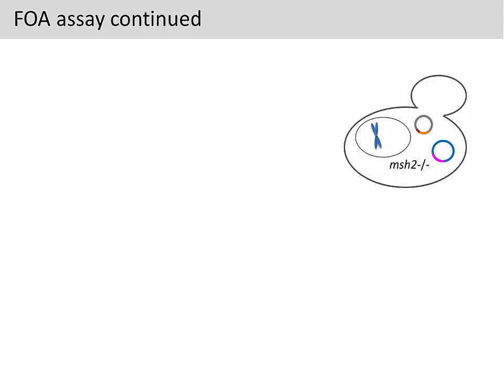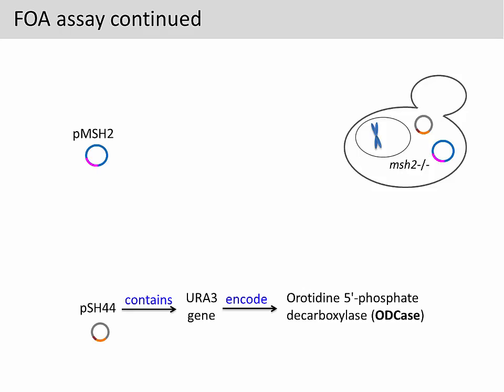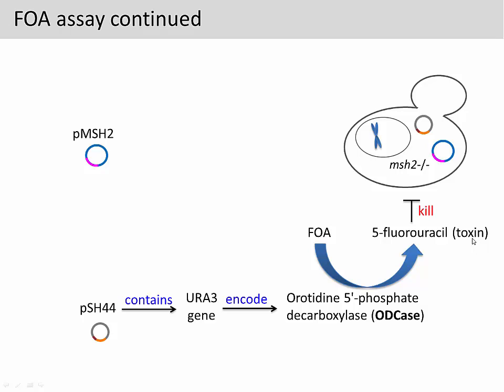So how does this reporter gene work in an FOA assay? To illustrate the connections among all the components present in the FOA assay, we will use a concept map to map out all the connections. In a concept map, we use a verb to connect two terms. For example, the PSH44 plasmid contains the URA3 reporter gene. This gene encodes an enzyme, and the enzyme converts FOA to 5-fluorouracil, which is a toxin. This toxin kills the yeast.